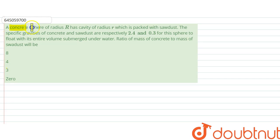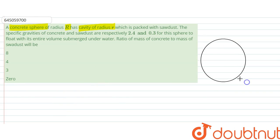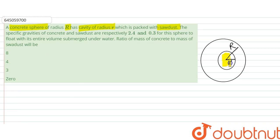The question says: a concrete sphere of radius R has a cavity of radius r. So we have a sphere of radius R, and inside it there is a small cavity of radius r. This cavity is packed with sawdust, and the outer part is a concrete sphere.